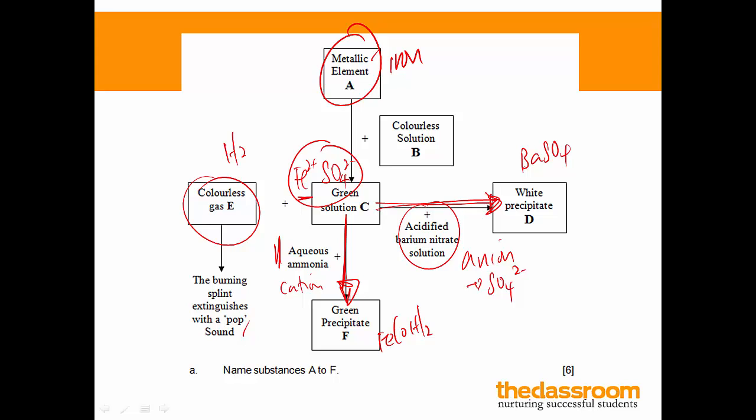Now, iron metal can react with acids. Now, what acid will B be? Now, if you look here, this is a sulfate. So, we're gonna guess that this is sulfuric acid. And let's check. When iron metal reacts with sulfuric acid, you will get iron sulfate and hydrogen gas. So, it really works out.